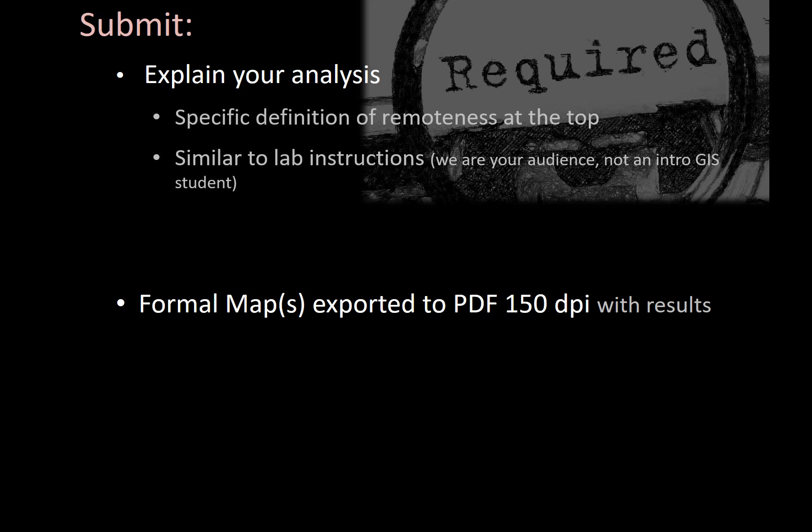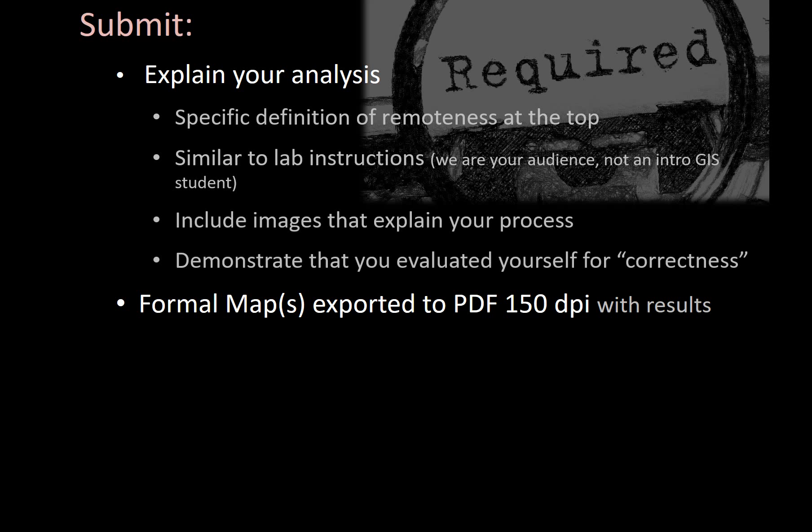We're not intro GIS students, so you don't have to go into laborious detail about how to add data or symbolize things. We want to know things like, if you used the slope tool, what units did you choose? How do you know that you did it correctly? How did you evaluate whether the results coming out of your tools are correct? Convince us that you know what you're doing. Include images, and demonstrate that you were evaluating yourself — when you ran the erase, what were you expecting to find and did you get that? Show us a picture and tell us why it's right.